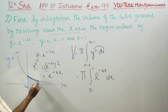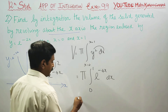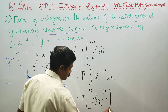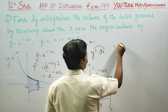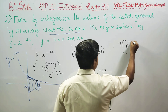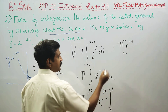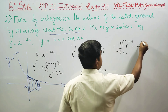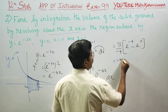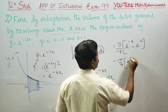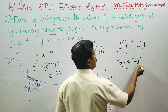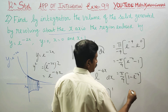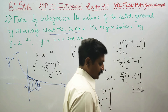Integrating, we get π × [e^(−4x) / (−4)] from 0 to 1. Applying limits: upper limit gives e^(−4×1) / (−4) and lower limit at 0 gives 1/(−4). So the result is π/4 × (1 − e^(−4)) cubic units, which is the required volume.